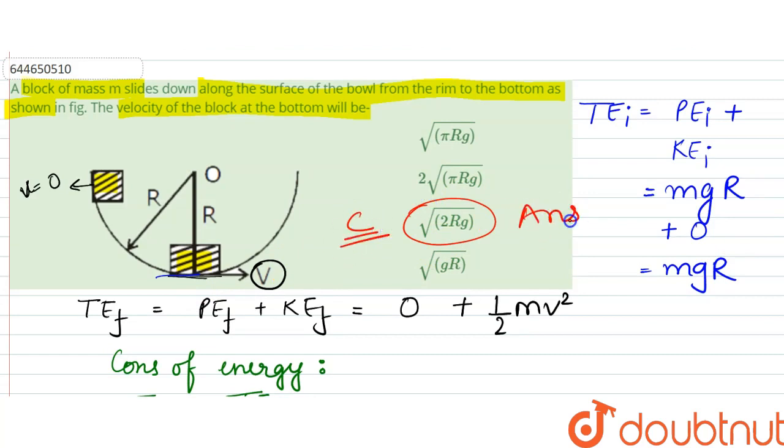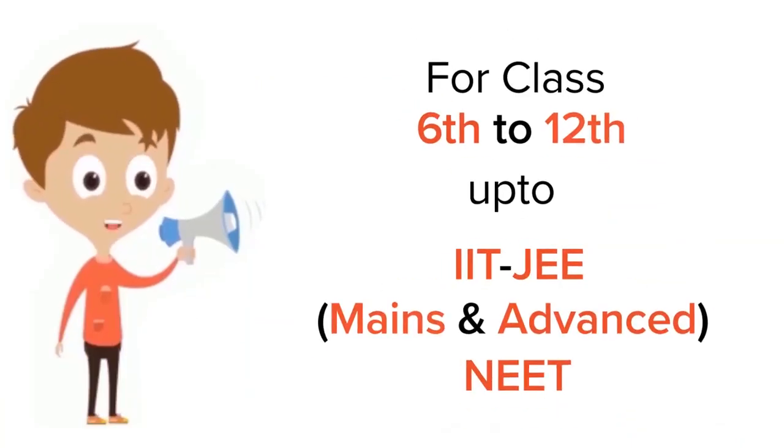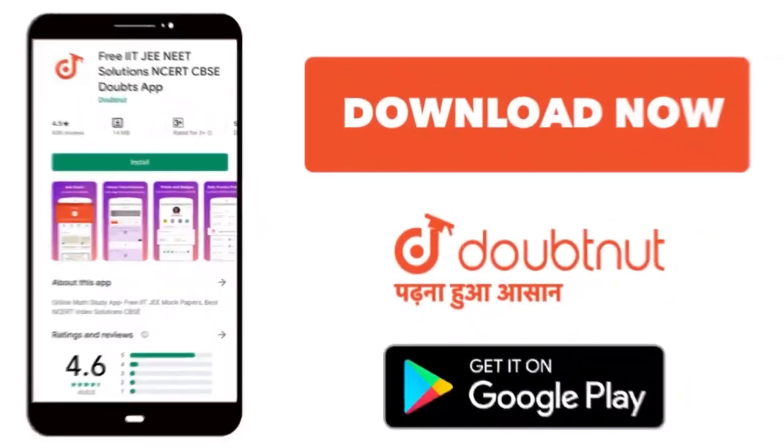So our answer would be velocity at this bottom would be option c, 2 r g. That is our answer. Thank you. For class 6 to 12, IIT and NEET level, trusted by more than 5 crore students, download Doubtnet app today.